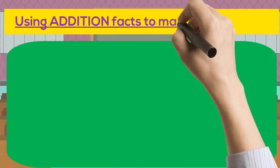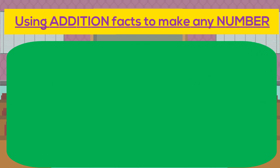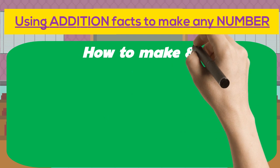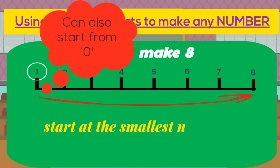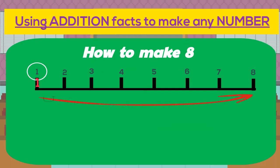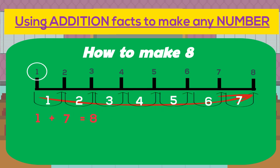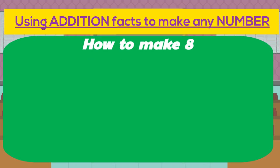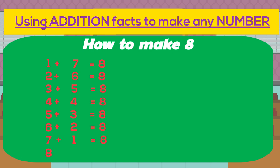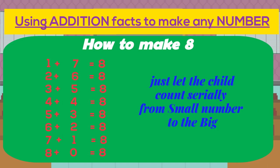By knowing single-digit addition, kids can do double-digit additions. Third tip: here we will discuss how to make any number using addition or subtraction without missing any facts. We will discuss how to make eight. For making eight by addition facts, ask the child to start from the smallest number and count forward up to eight. We write one and count up to eight — that is seven numbers — so one plus seven equals eight. Then after one comes two, so we write two and count from two up to eight — that is six numbers — so two plus six equals eight.